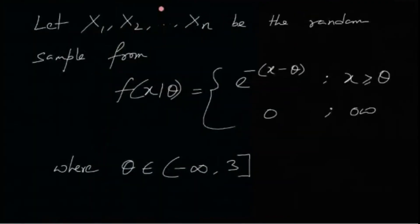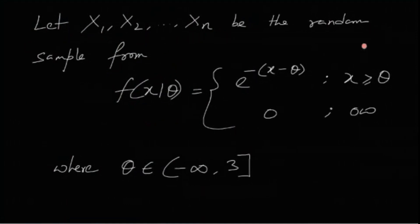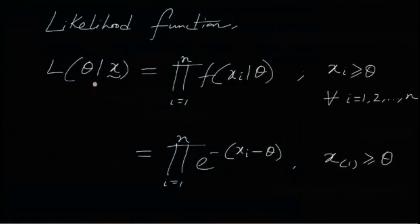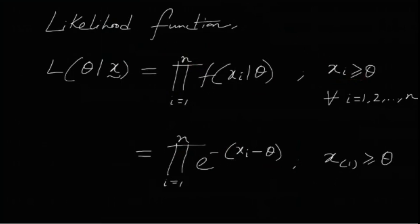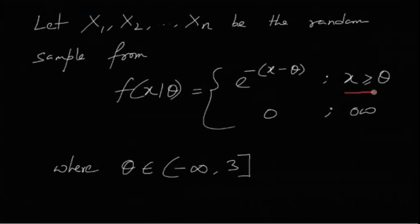Let x₁ through xₙ be a random sample from this distribution, where θ belongs to (−∞, 3]. The likelihood function L(θ | sample) is the joint PDF, which is the product of f(xᵢ) = e^(−(xᵢ−θ)), and remember each xᵢ must be greater than or equal to θ, because the PDF requires x ≥ θ.